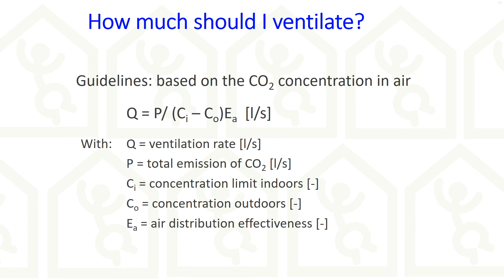How much ventilation is required? This is not an easy question to answer. Current guidelines for indoor air quality are mainly based on the CO2 concentration in air that is allowed. CO2 is used as an indicator of the presence of people. With the equation shown here, it is possible to calculate the required ventilation rate per person in a space to keep below the allowed CO2 concentration. The air distribution effectiveness in that equation tells us something about how effectively the air is distributed — for complete mixing, this value is 1.